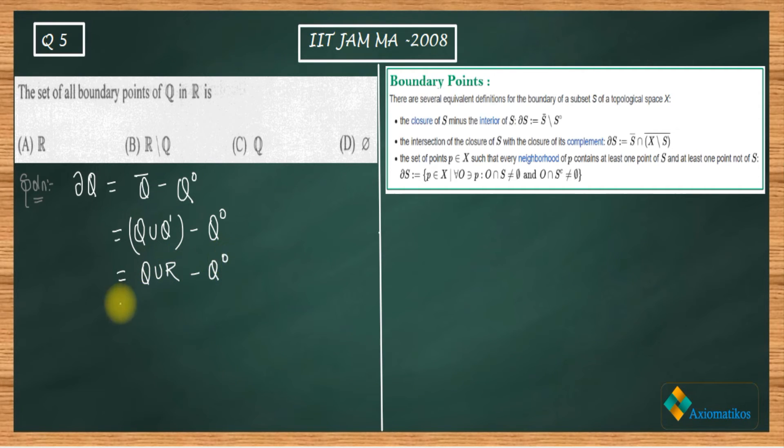So now since R is a superset of Q, therefore this union will be itself R. Now you know that Q has no interior points, that you already know. So I am not going to explain why Q interior is empty. So it's empty. So Q interior is empty.